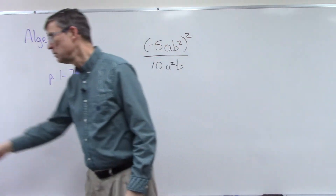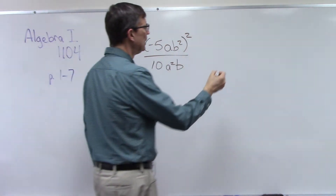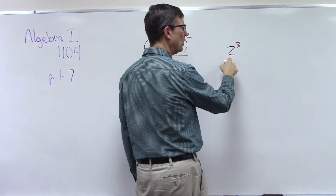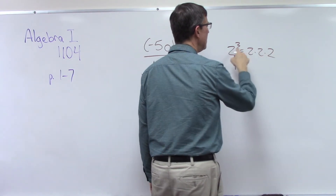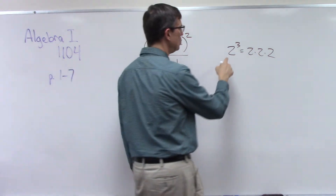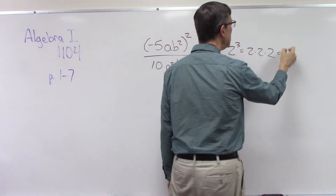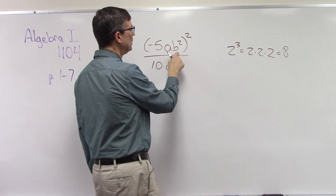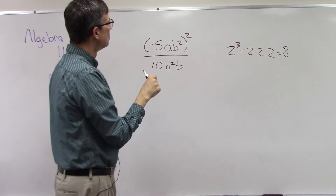Students sometimes either forget or didn't know about exponents. Basically, an exponent means we're taking a number — we call that the base — and raising it to an exponent means we use that number of times as a factor, or times itself. So two times itself three times: the answer is not six, it would be eight. We can do that with letters and with numbers.